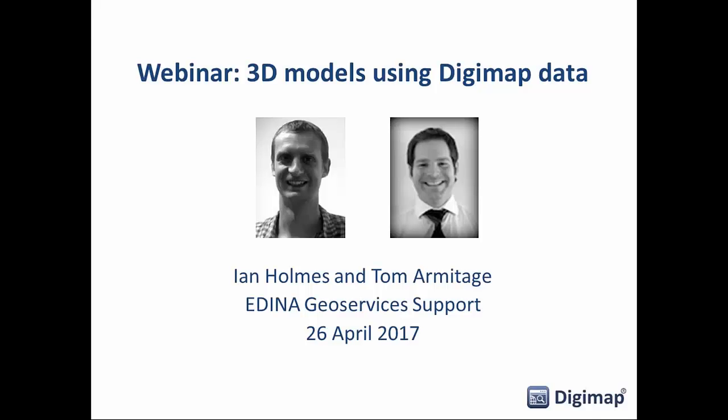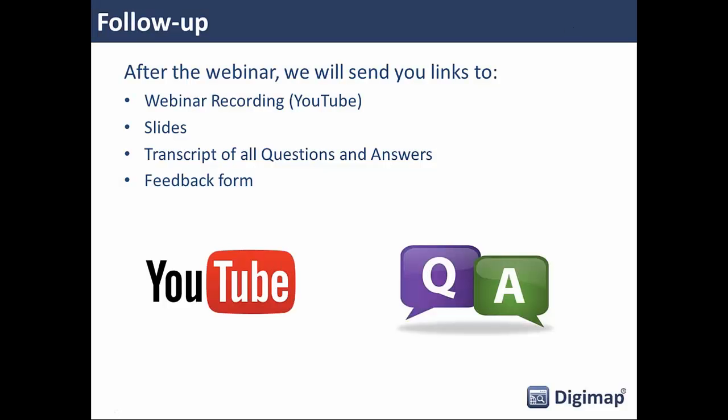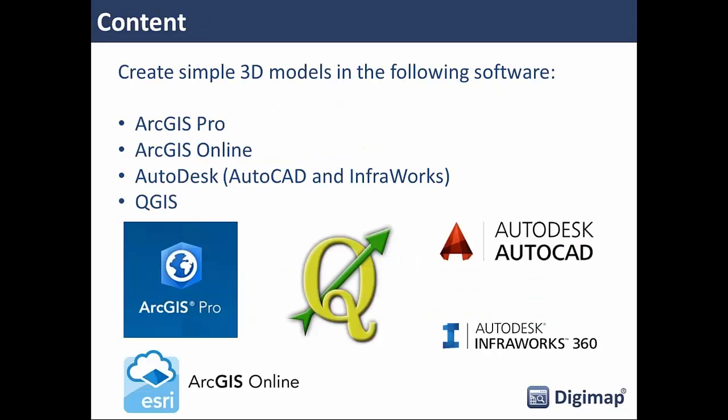My name is Ian Holmes and assisting me today is Tom Armitage. Tom's going to be answering the questions that come through. Today we're going to look at creating 3D models using the data from Digimap. We're both part of the GeoServices support team here at Edina. After the webinar you'll get an email — hopefully 24 hours after this. We're recording this webinar and will stick that on YouTube. Any slides we cover today we'll put online as well, along with a transcript of questions and answers and a link to a feedback form.